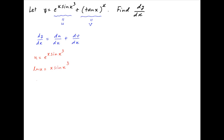Taking the derivative of both sides with respect to x, we get 1 upon u times du upon dx is equal to sin x cube times the derivative of x, which is 1, plus x times the derivative of sin x cube, which is cos of x cube times 3x square.